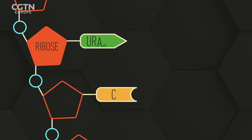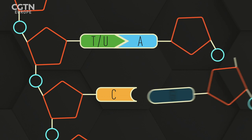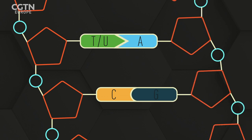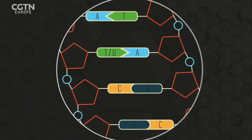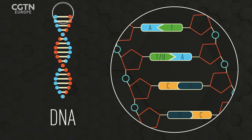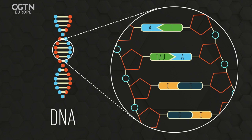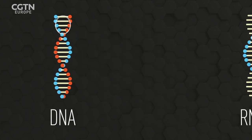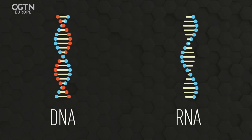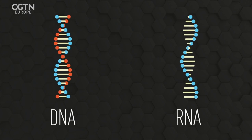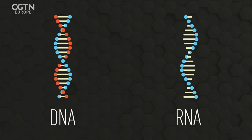In RNA, thymine is replaced by uracil. Each base has a singular opposing base to which it can bond, creating what is known as a base pair. Adenine always pairs with thymine, or uracil, and cytosine always pairs with guanine. In DNA, base pairs form two complete opposing strands in a twisted ladder known as a double helix. RNA typically exists as a single strand, sometimes bonding with itself to create more stable structures.